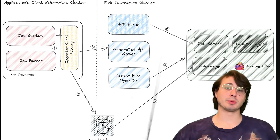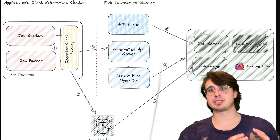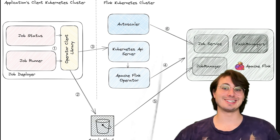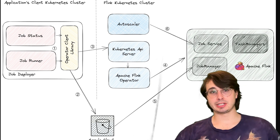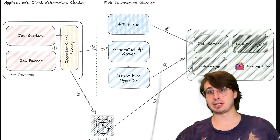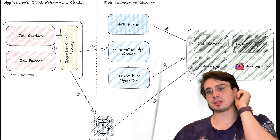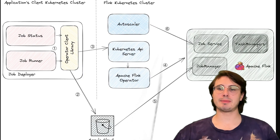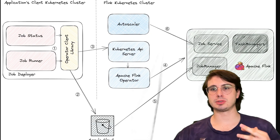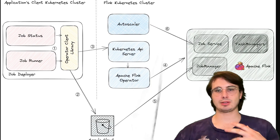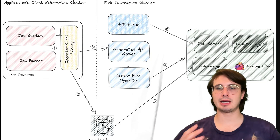When deploying on Kubernetes, consider using stateful sets for job managers to ensure proper leader election and state management. And especially for production environments, think about high availability — you want multiple instances of your components. Your job manager, the coordination center of Flink applications, needs to be configured for automatic failover to a DR setup.